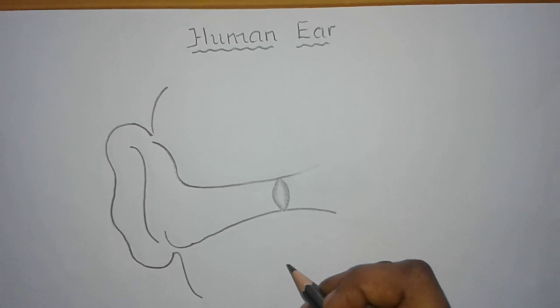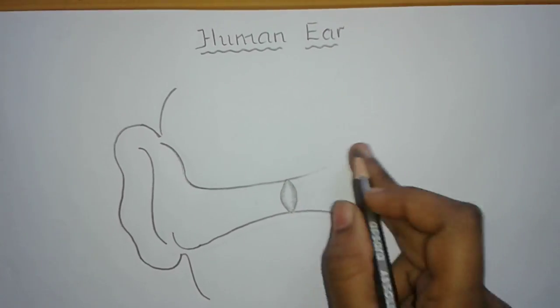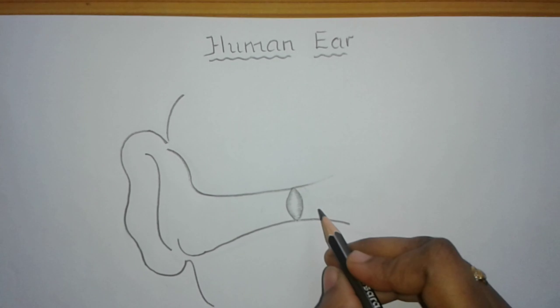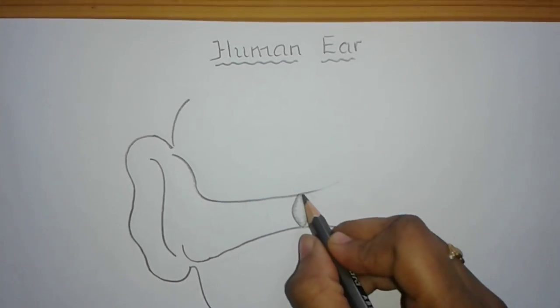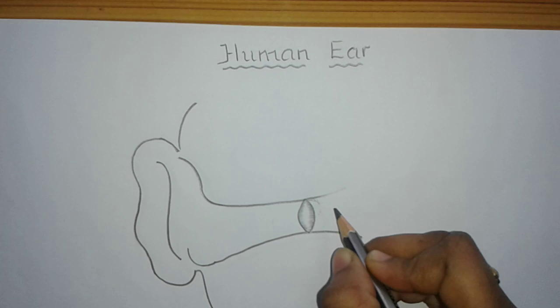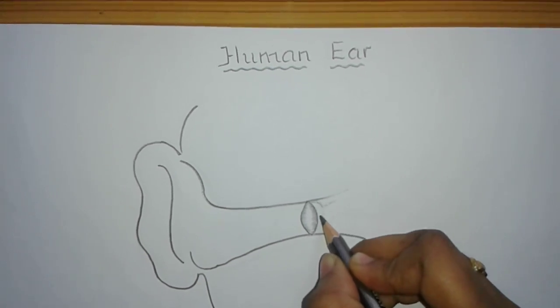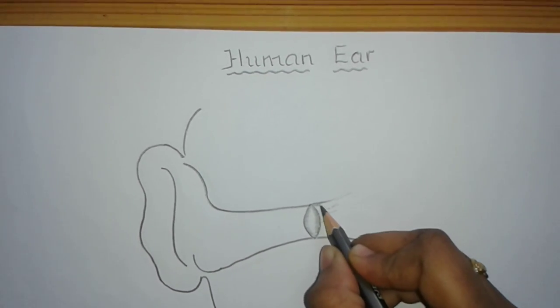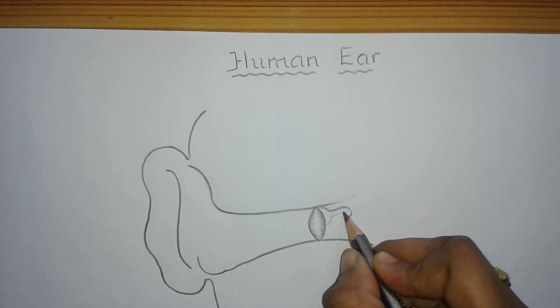Now let us draw the second important part of the ear, that is the middle ear. It consists of three small bones. The first one is malleus, also called sutige in Kannada. It is just like a hammer. So draw a structure which looks like a hammer.